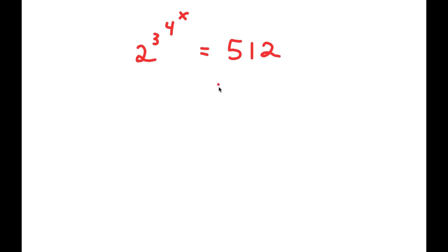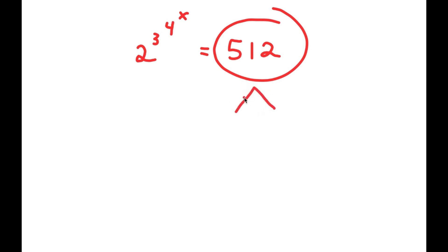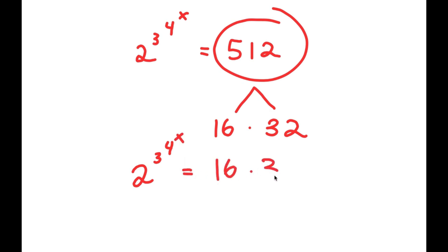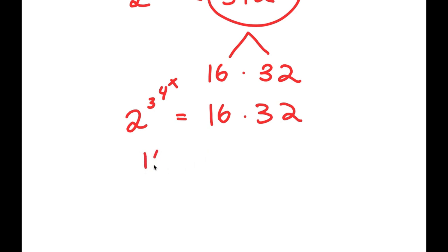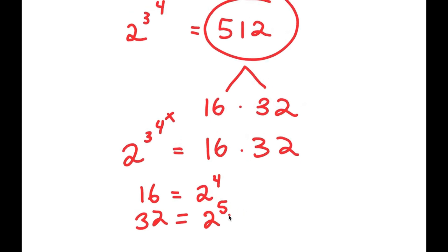To solve this, I'm going to first start by rewriting 512. So 512 is the same thing as 16 times 32. Now I can write this as 2 to the power of 3 to the power of 4 to the power of x is equal to 16 times 32. Now 16 is equal to 2 to the power of 4 and 32 is equal to 2 to the power of 5. So this is why we wrote 512 as 16 times 32, because now I have 2 to the power of 4 times 2 to the power of 5.